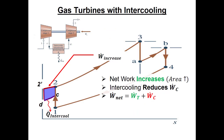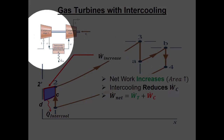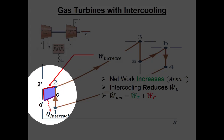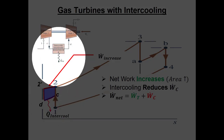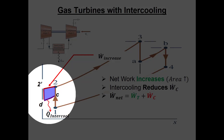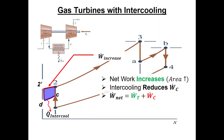Unlike the Rankine cycle, we can also split our compressors. Stage one compressor takes the fluid from atmospheric pressure to some intermediate pressure. Because it's harder to increase the pressure of a gas than a liquid, we cool the fluid down before it enters the second stage compressor. This gives a bleb on the left side of the TS diagram and increases net work by reducing the power needed to compress the fluid. Both reheat and intercooling increase net power and improve thermal efficiency.